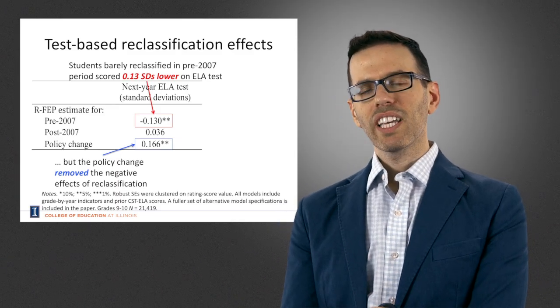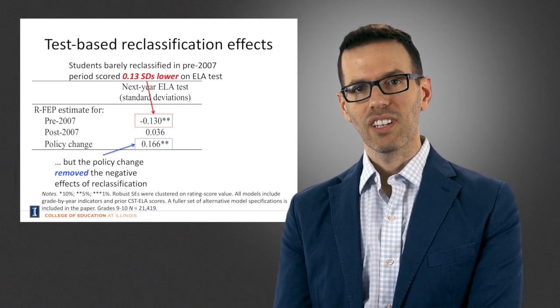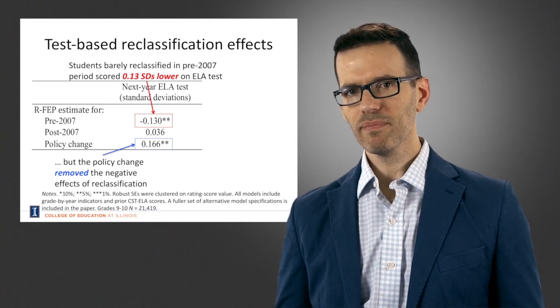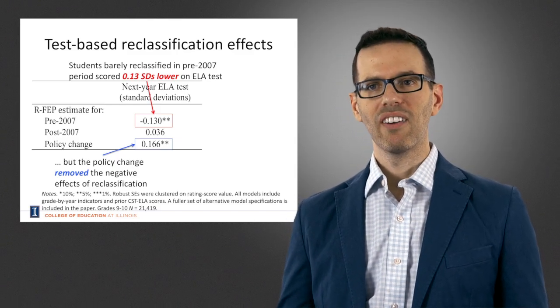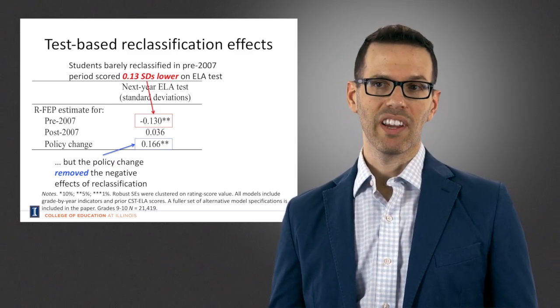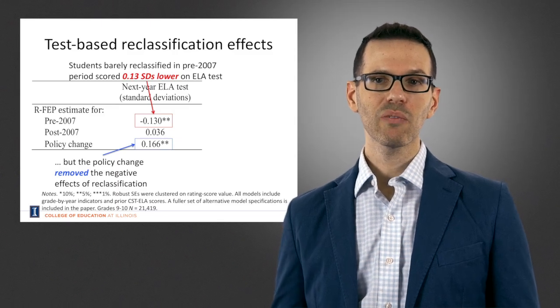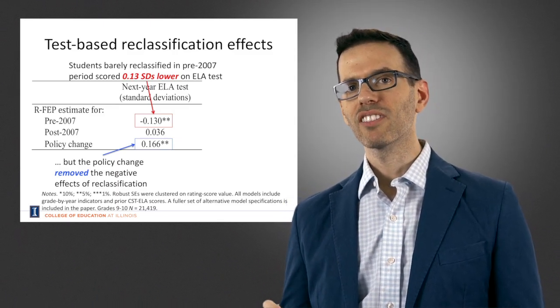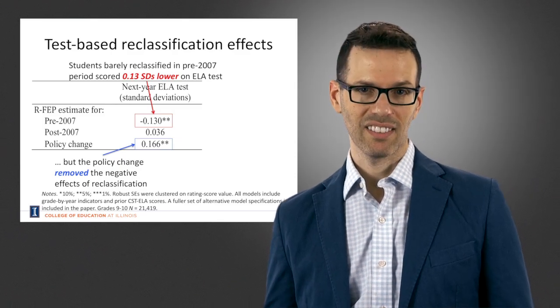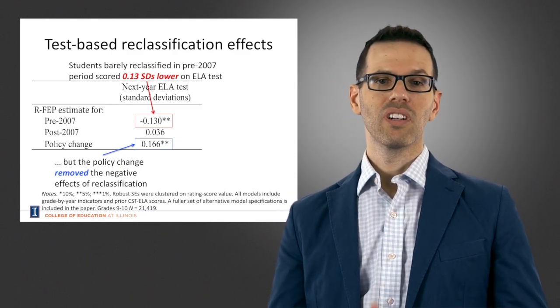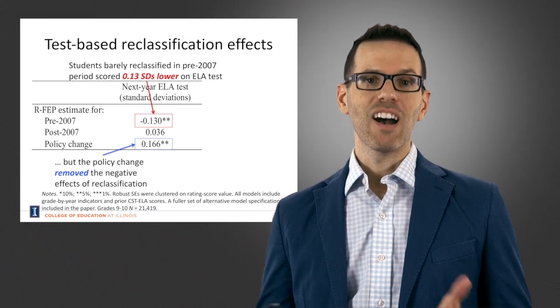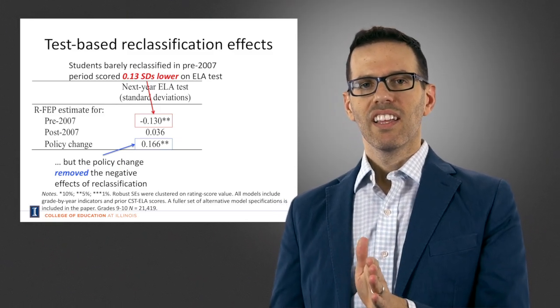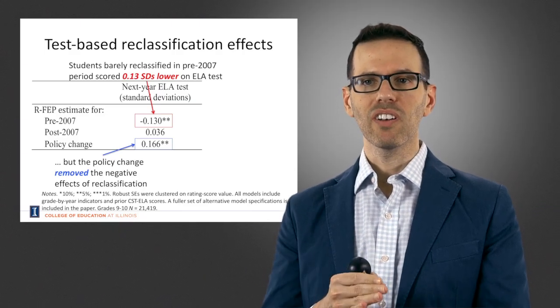Here the first outcome we're looking at is next year's English language arts test. These are in standard deviation units so you can interpret them as effect sizes. In the pre-2007 period, students who are barely reclassified are scoring about 0.13 standard deviations lower on next year's English language arts test than students who are just barely not reclassified. That was when the test was not so difficult. Then when it becomes more difficult...